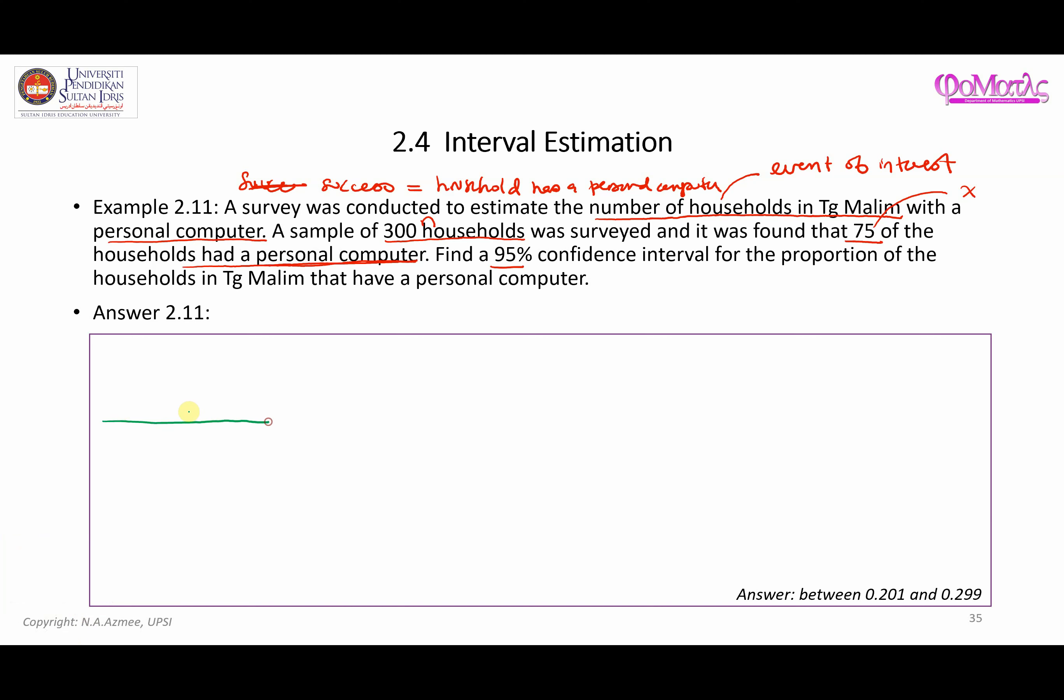Here we have this standard normal distribution at 0. This one is the confidence level which is 95%, in between this point and this point. This is Z alpha over 2 and this one is negative Z alpha over 2. The area under the curve is 0.95. Therefore we know that alpha is 1 minus confidence level, and alpha in this case is 0.05.